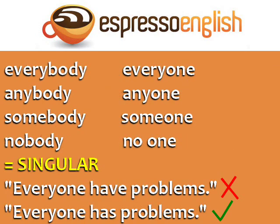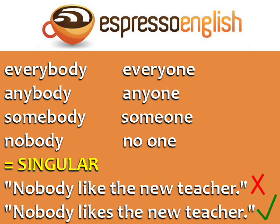The words everybody, anybody, somebody, and nobody, as well as everyone, anyone, someone, and no one, are all singular. 'Everyone have problems' is incorrect. The correct sentence is 'everyone has problems.' Even though 'everyone' refers to many people, it is treated as a group and takes the singular verb. 'Nobody like the new teacher' is also incorrect. The correct form is 'nobody likes the new teacher.'